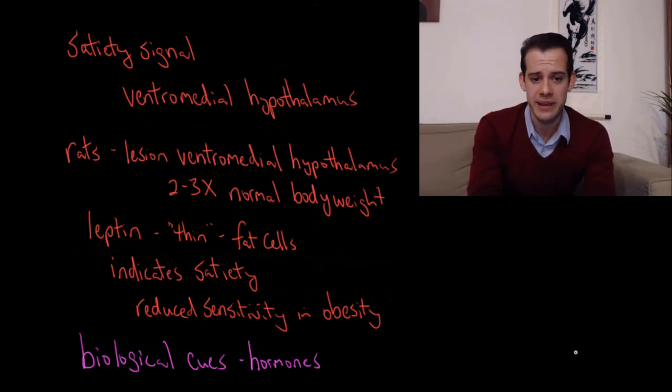And another way we see the role of leptin is in people who are obese. And one thing that we see in obesity is reduced sensitivity to this leptin signal. So in other words, people who are obese, their fat cells are releasing leptin and trying to tell their body that they're full, they should stop eating, but the signal is not getting there. There's a lost sensitivity to leptin, and this may be playing a role in obesity.